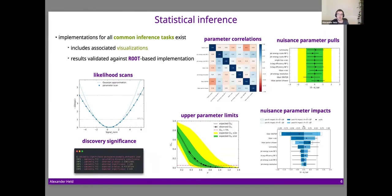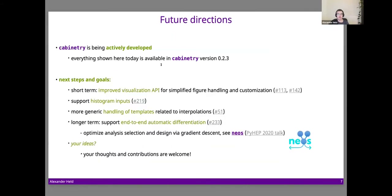Once the model is available, cabinetry can steer statistical inference. There are many different visualizations included: parameter correlations, pulls of nuisance parameters, likelihood scans, upper limits, and parameter ranking by impact. Everything is validated against reference implementations. All of this is available today, and we'll see it working in the notebook shortly.